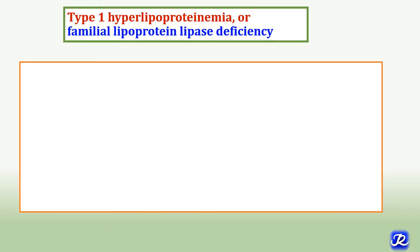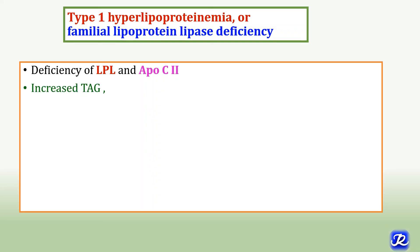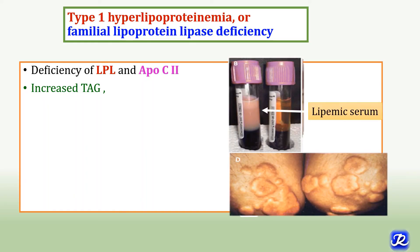Type 1 hyperlipoproteinemia, also called familial lipoprotein lipase deficiency, is due to deficiency of the lipoprotein lipase enzyme expressed in the capillary walls of adipose tissue and muscle, which plays a very important role in breakdown of triacylglycerol from chylomicrons in the well-fed condition. Deficiency of lipoprotein lipase and ApoC2, which activates this enzyme, leads to Type 1 hyperlipoproteinemia with increased TAG levels in the blood, and the serum in these patients appears lipemic.